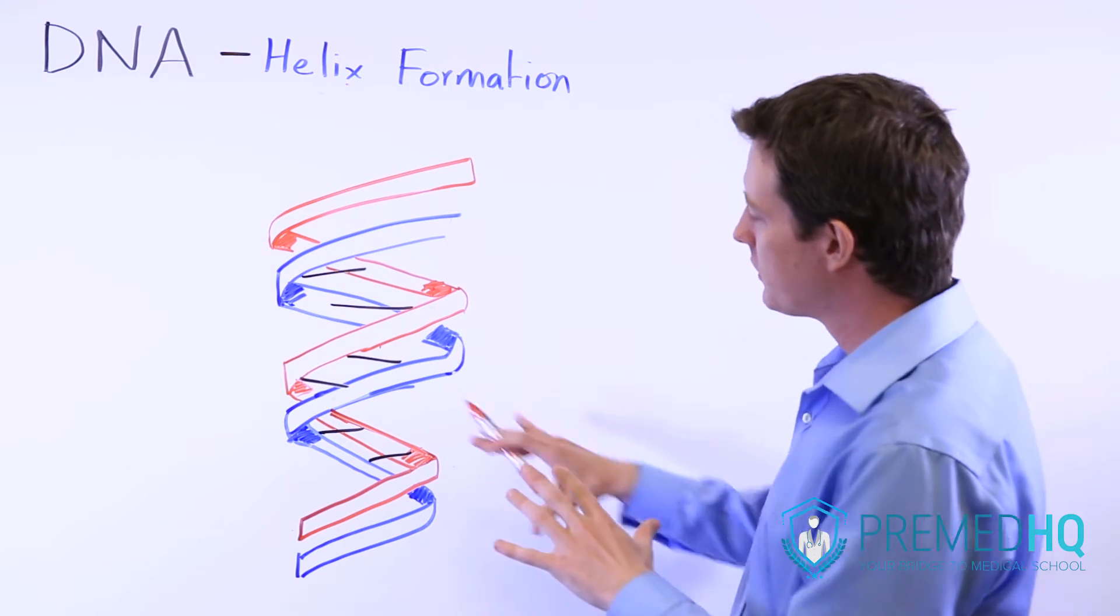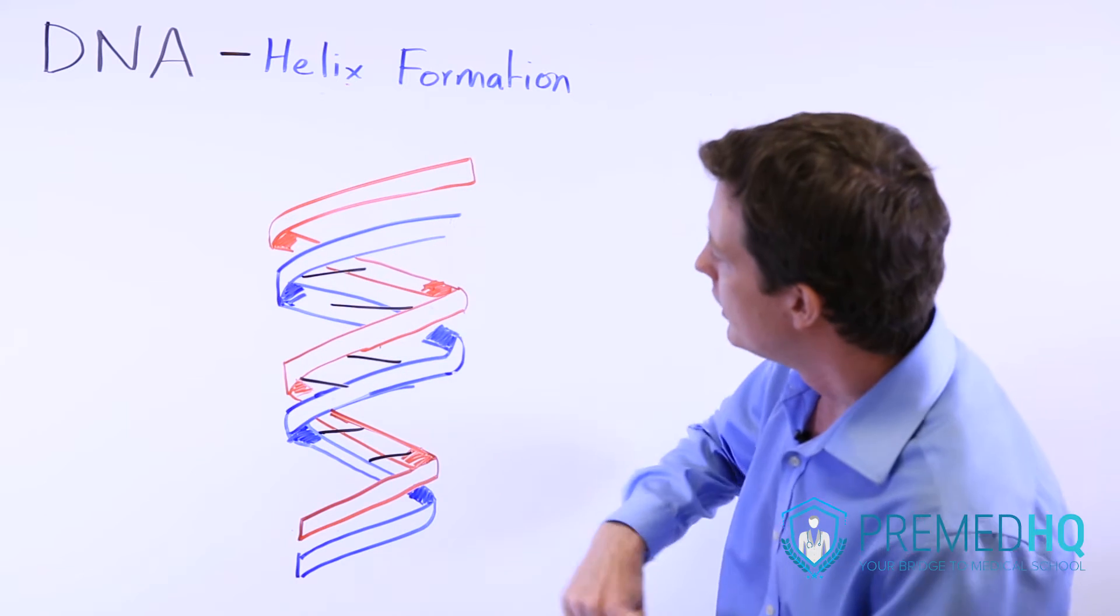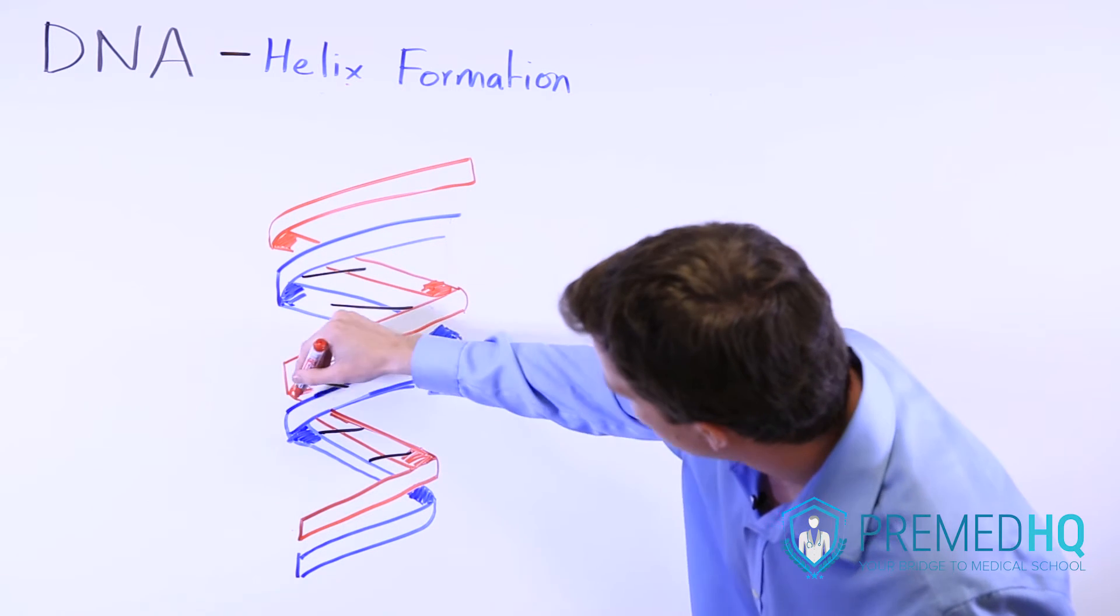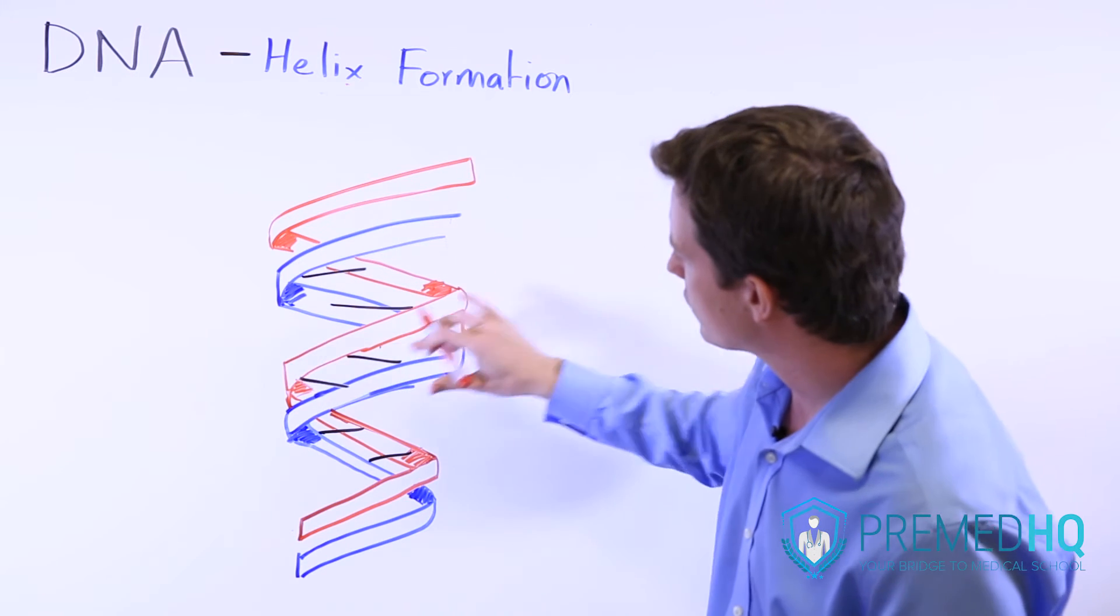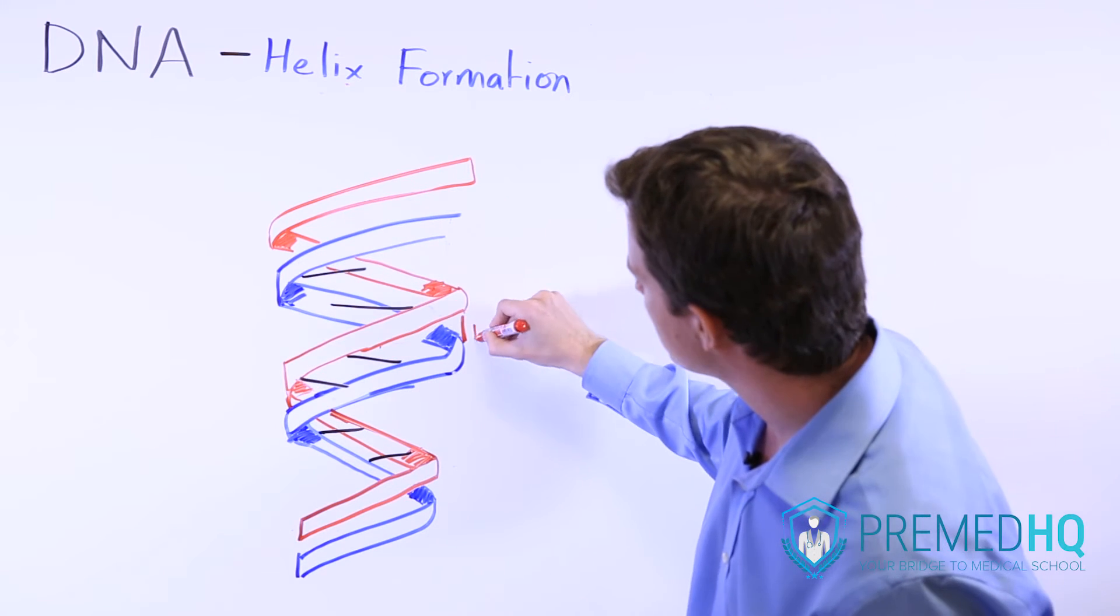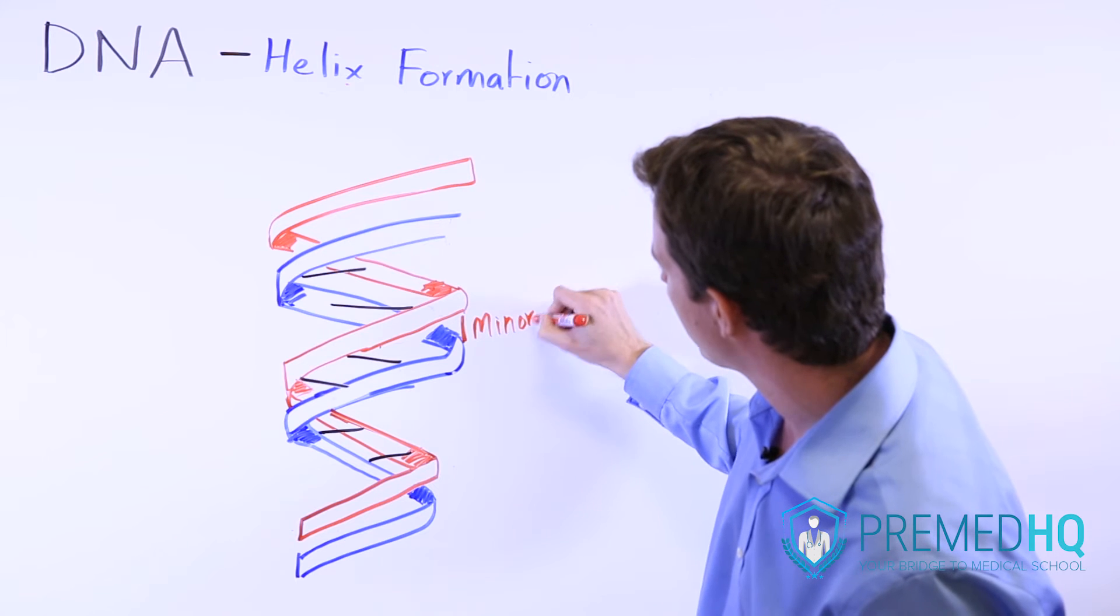Essentially this helix, notice that it's not completely uniform, but there is a region here where the red and blue two things are very close to each other, and this is known as the minor groove.